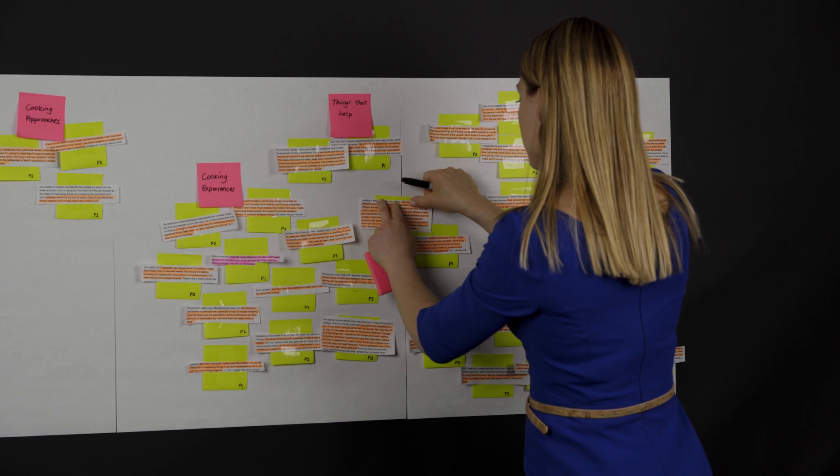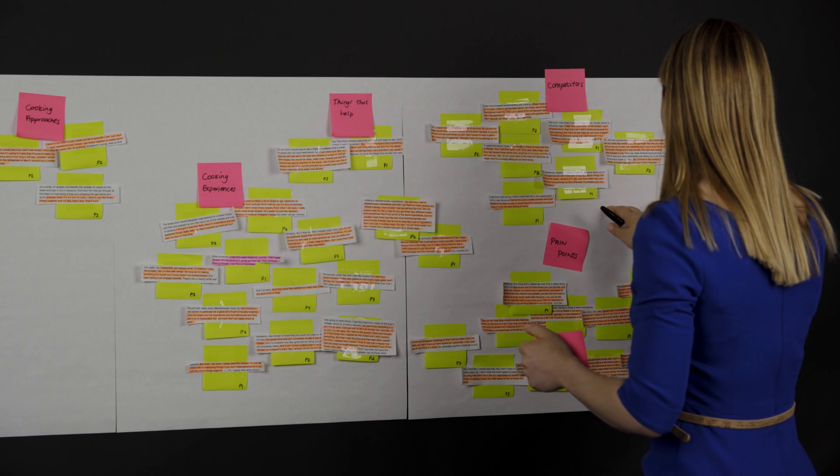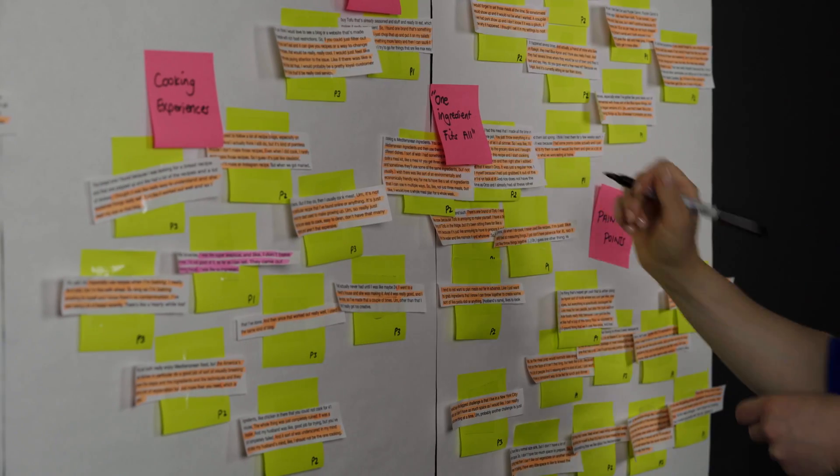So here I'm creating a new grouping, because I can see multiple participants talking about approaching cooking in a very flexible way, wanting to throw ingredients together to make a successful dish, and also have ingredients that can be used in many different recipes. So I'm giving this grouping a new name to describe this finding.